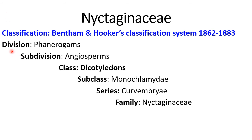Now we will go through the systematic position according to the Bentham and Hooker system of classification. Division is Phanerogams, because these are flowering plants. Subdivision is Angiosperms, because ovules are enclosed in the ovary and seeds are enclosed in the fruit. Class is Dicotyledons, because the embryo has 2 cotyledons. Subclass is Monochlamydae, because there is only one whorl of perianth, not differentiated into calyx and corolla. Series is Curvembryae, and the family is Nyctaginaceae.